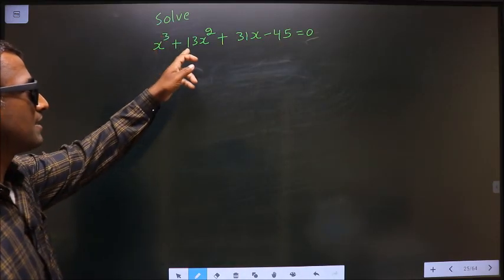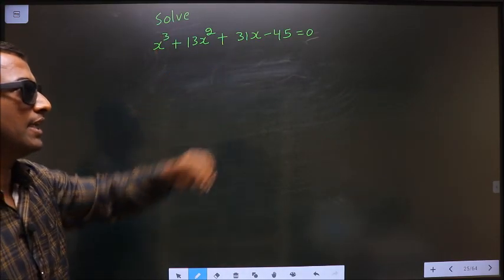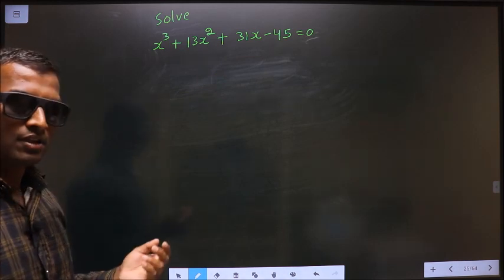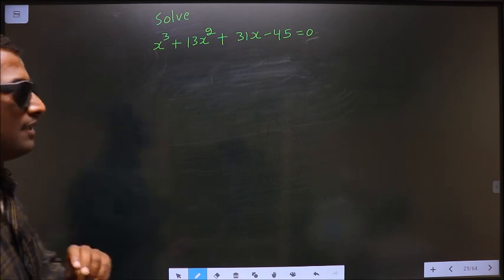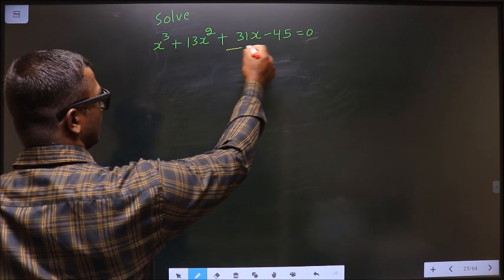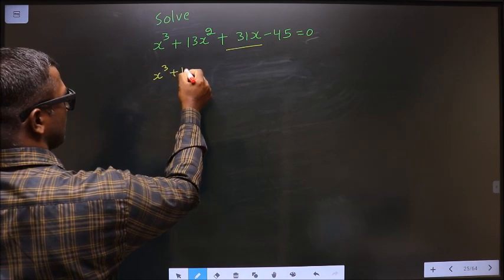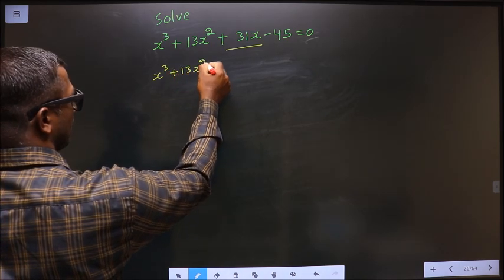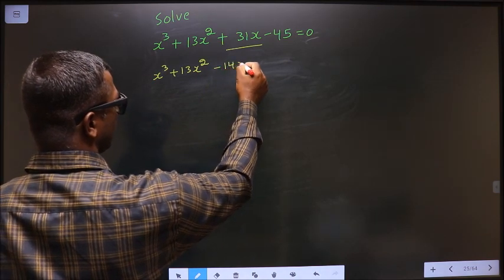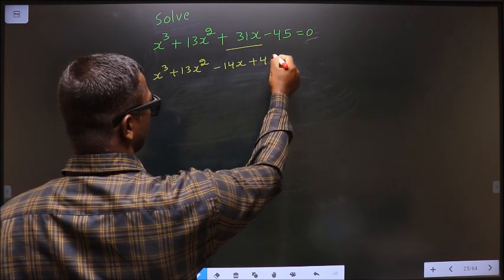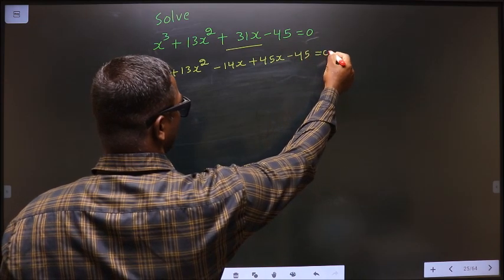Solve x cube plus 13x square plus 31x minus 45 equal to 0. To solve this equation, we have to change the x term, that is 31x. So x cube plus 13x square — in place of 31x, I write minus 14x plus 45x minus 45 equal to 0.